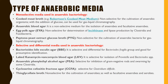Selective and differential media used in anaerobic bacteriology: Bacteroides Bile Esculin Agar is selective and differential for the Bacteroides fragilis group and good for presumptive identification. Laked kanamycin-vancomycin blood agar is selective for isolation of Prevotella and Bacteroides species. Anaerobic phenylethyl alcohol agar is selective for inhibition of gram-negative rods and swarming by Clostridium species. Cycloserine-cefoxitin-fructose agar is selective for Clostridium difficile. Thioglycolate broth is non-selective for cultivation of anaerobes as well as facultative anaerobes and aerobes.